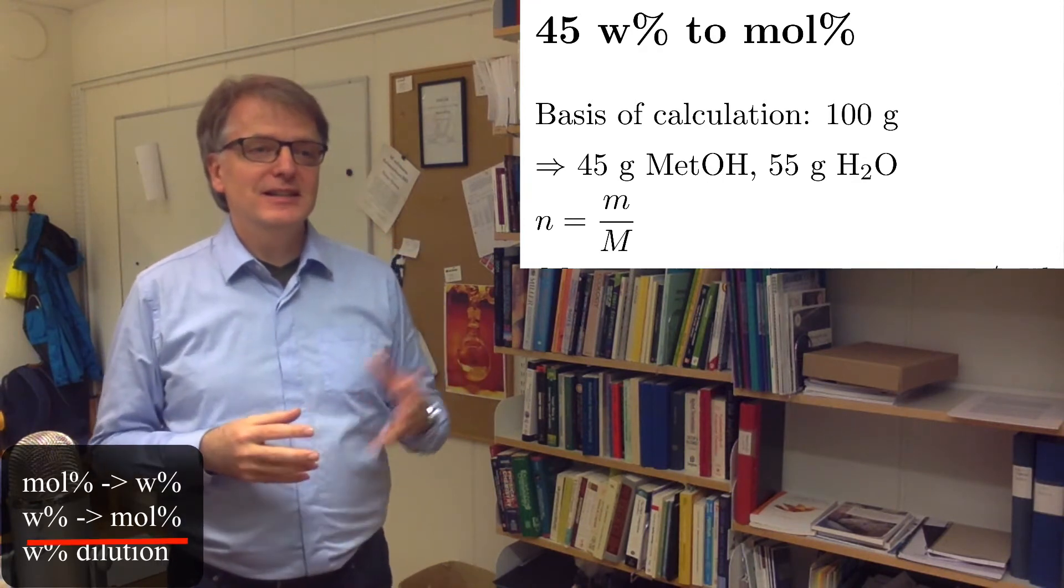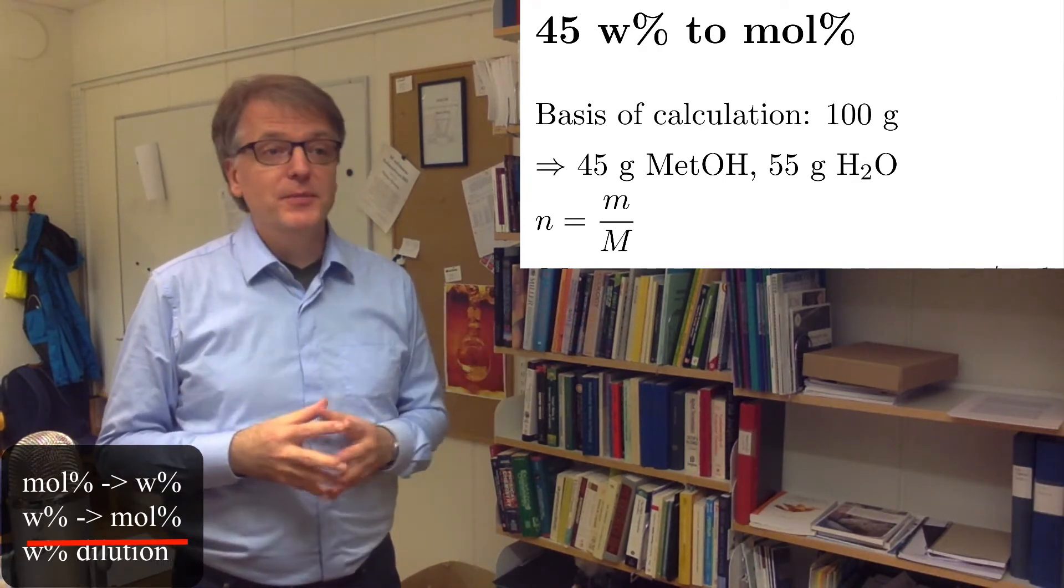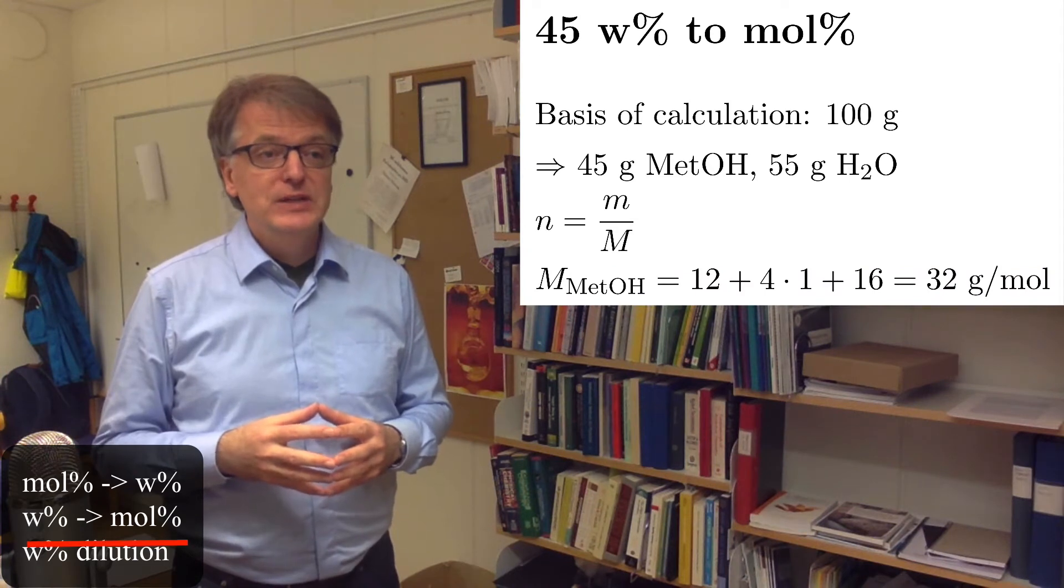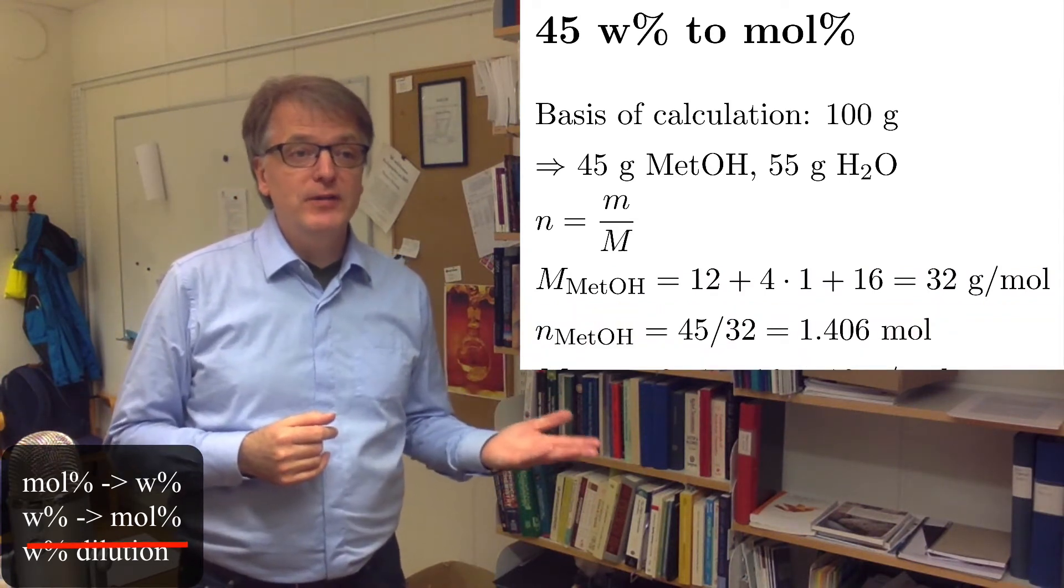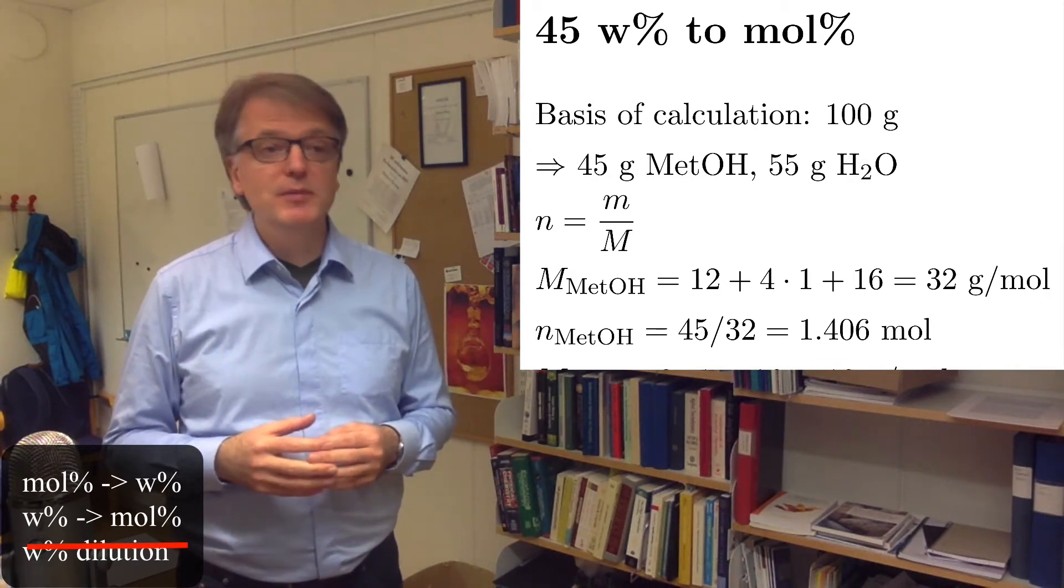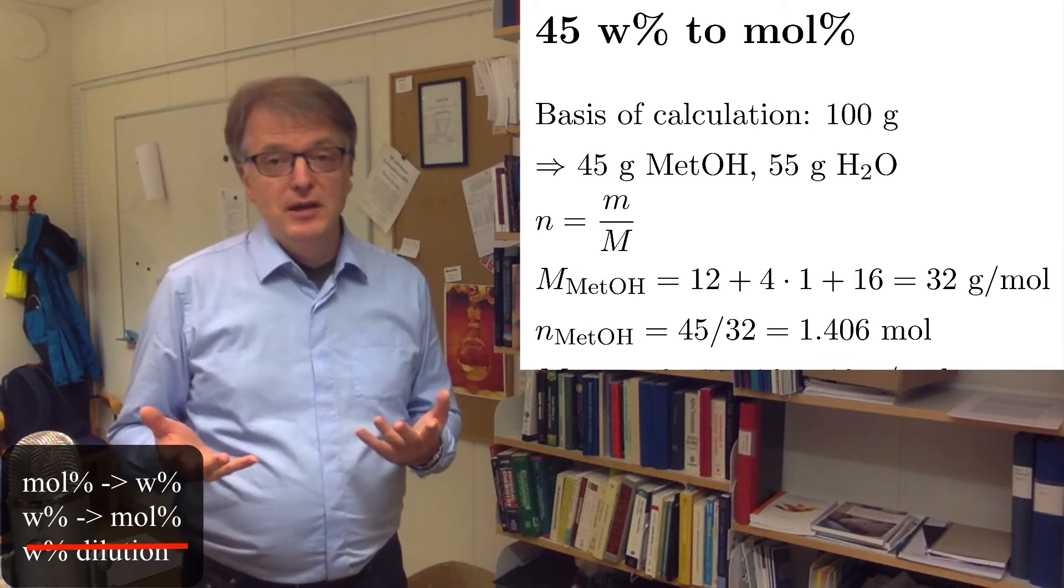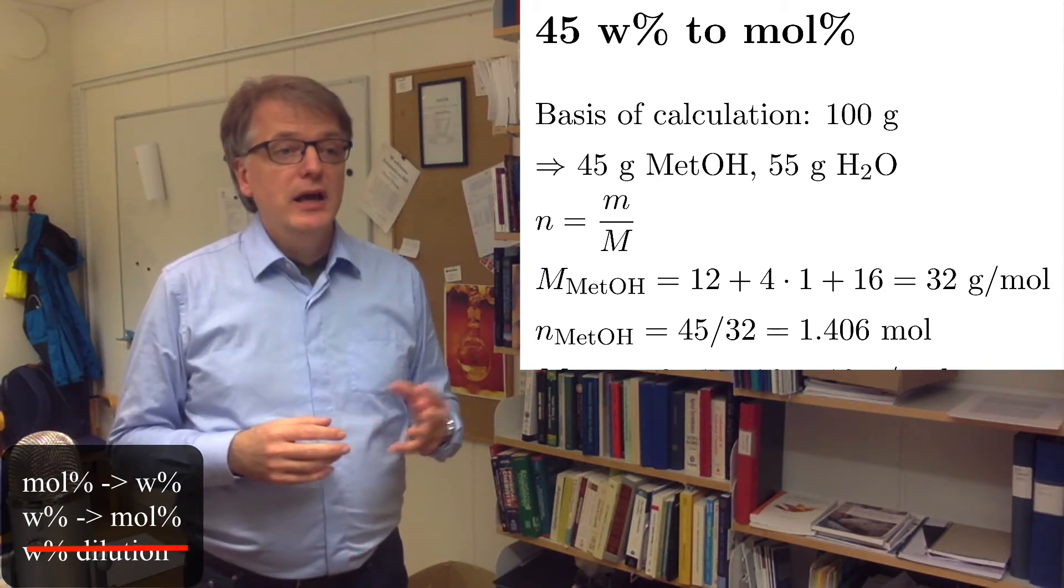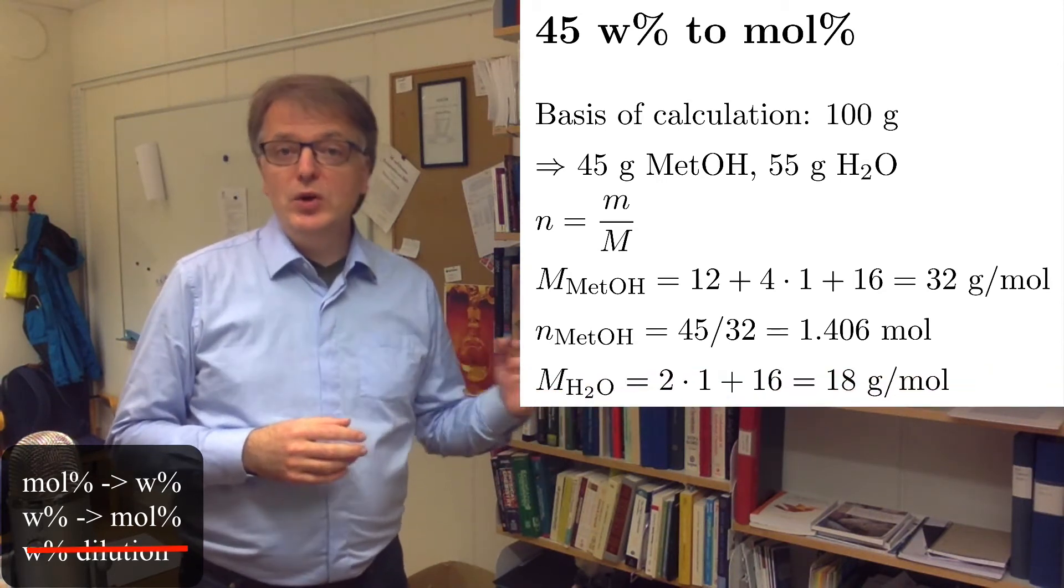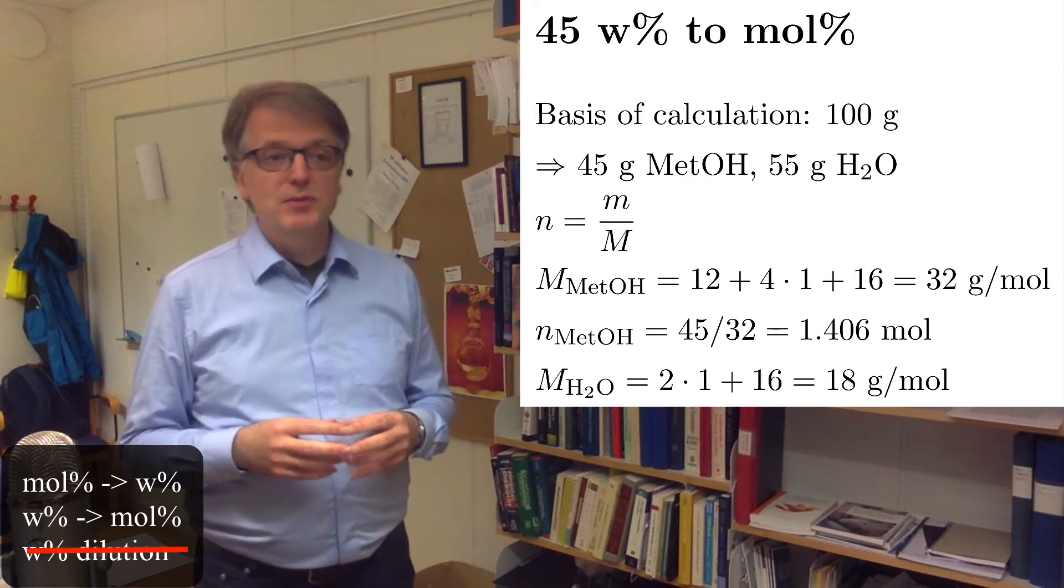Which means that, again, the molar mass of methanol is 32. So, we get the number of moles of methanol as 45 grams divided by 32 grams per mole, and we get something like 1.406 moles. And the molar weight for water, as before, is 18 grams per mole.